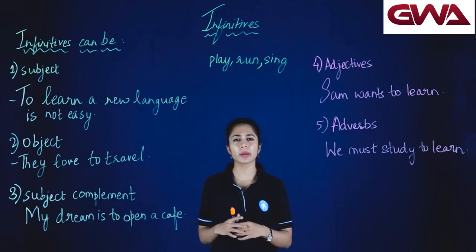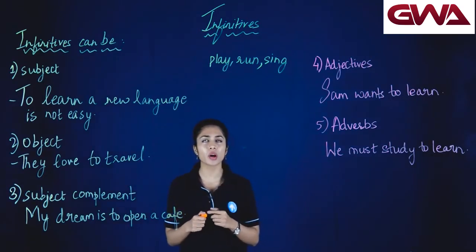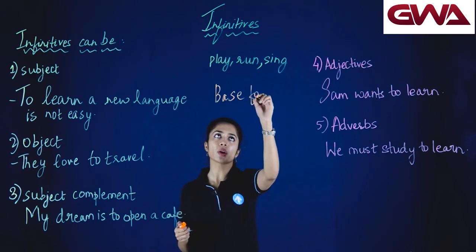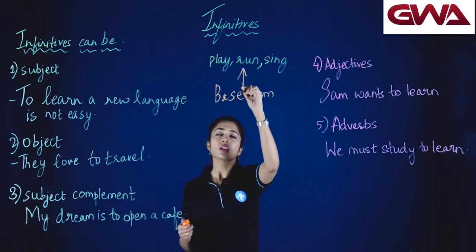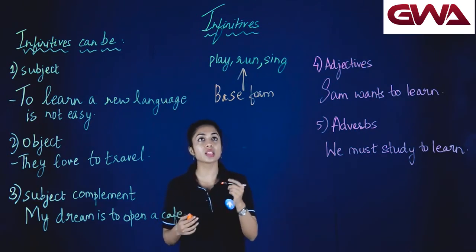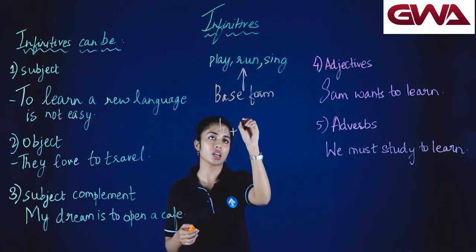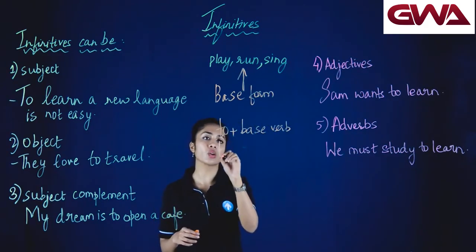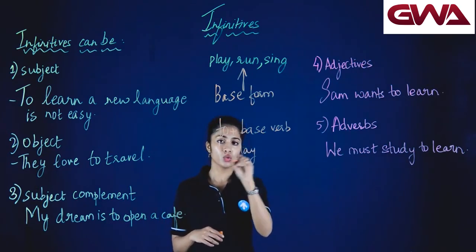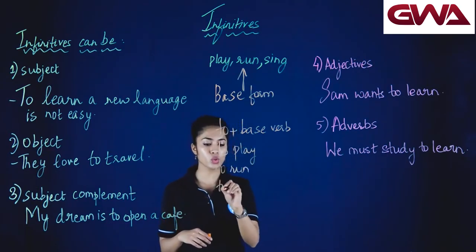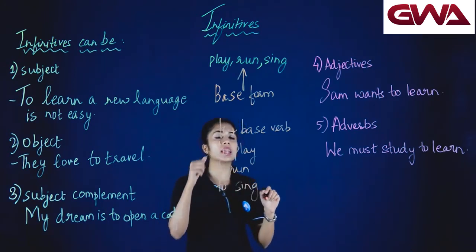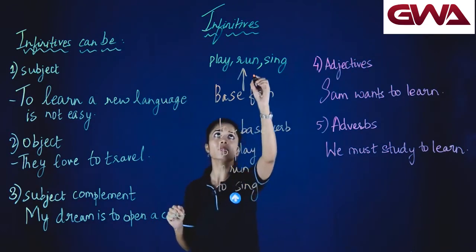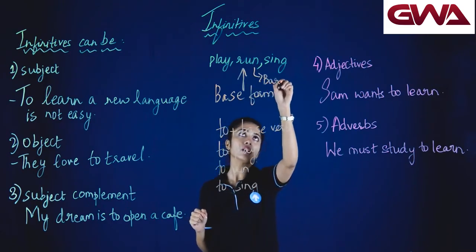आइए सीखते हैं infinitives के बारे में। Infinitives are basically the base form of the verbs — like play, run, sing — these are base forms of the verbs. These are infinitives। लेकिन infinitives mostly 'to' इस word के साथ use किये जाते हैं: to plus base form of the verb। अगर मुझे infinitive बनाना है तो मैं कहूगी to play, to run, या to sing। जभी infinitives without 'to' इस्तमाल किये जाते हैं, उन्हें हम कहते हैं bare infinitives।